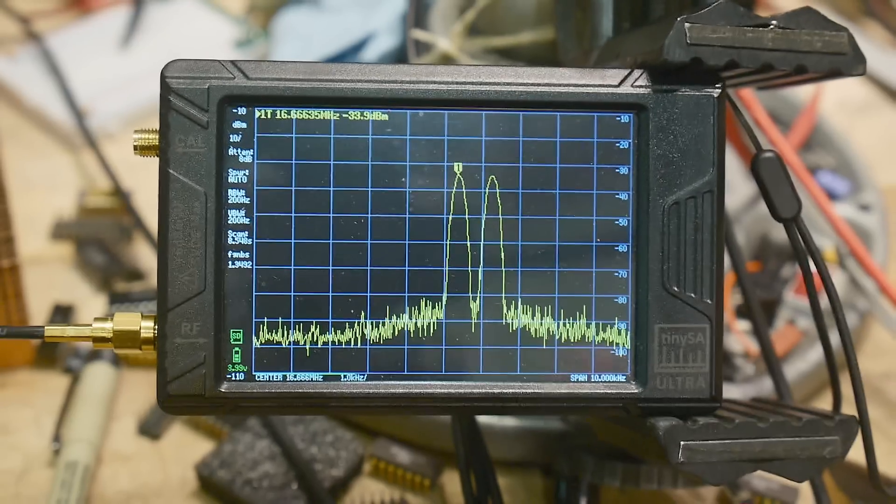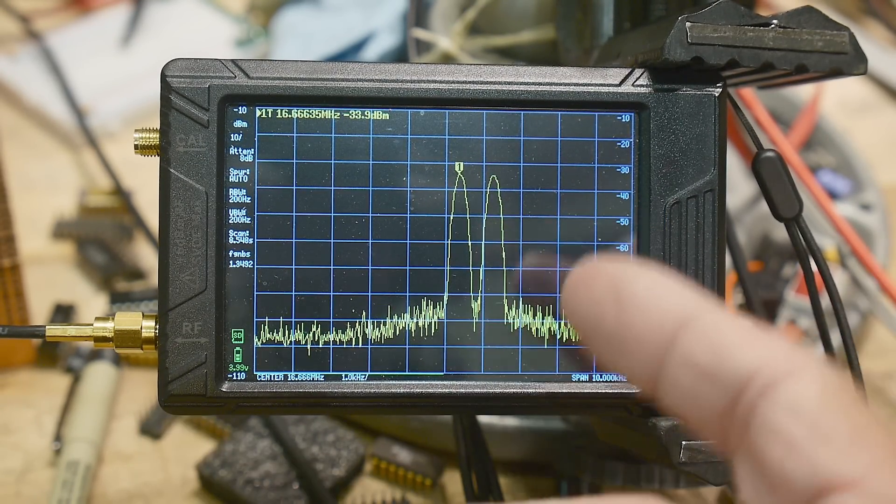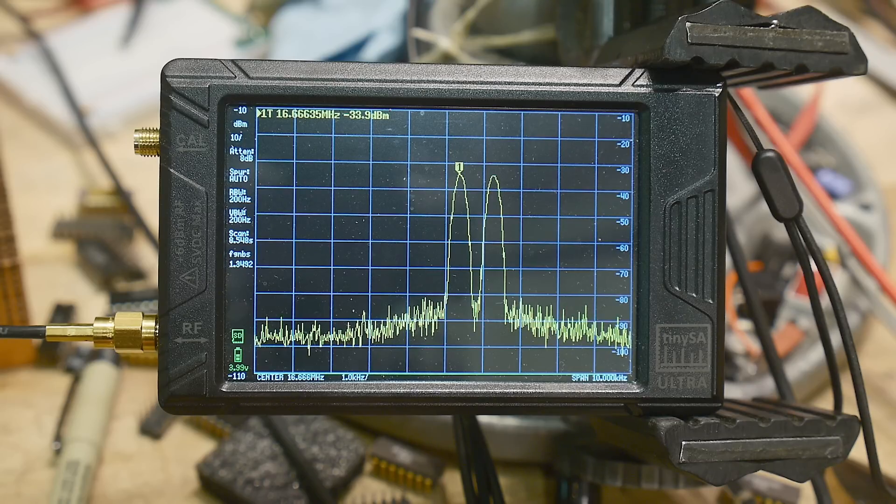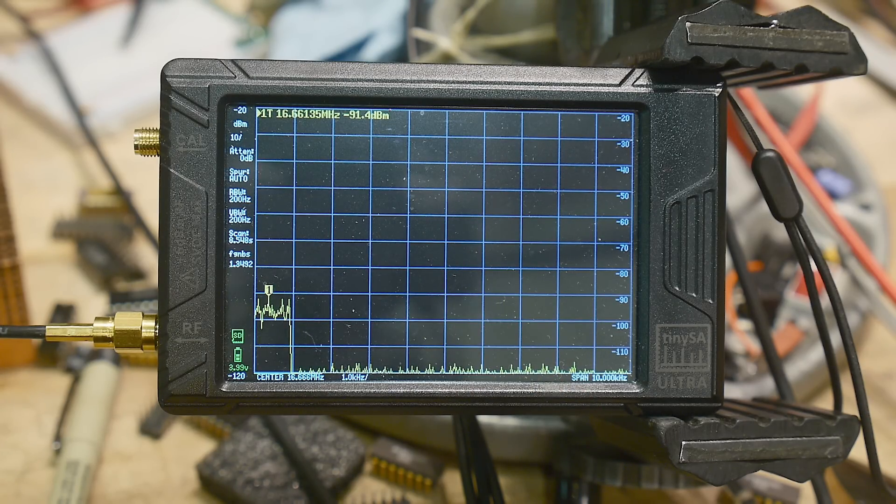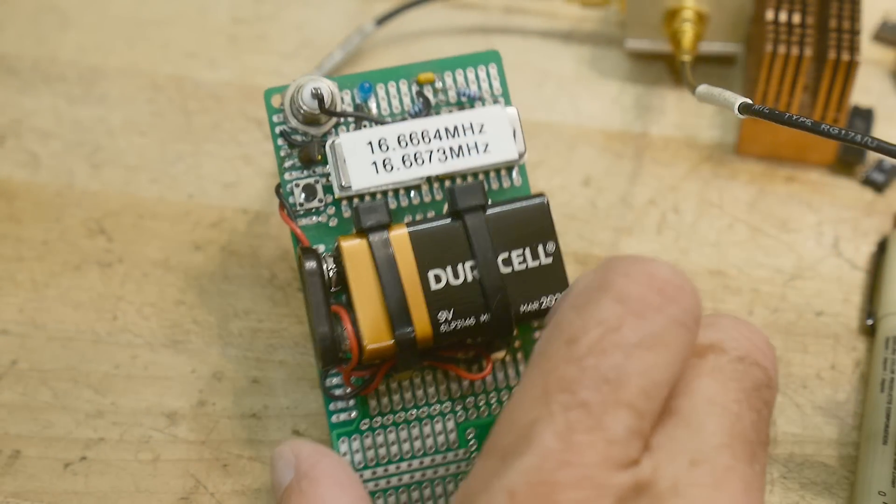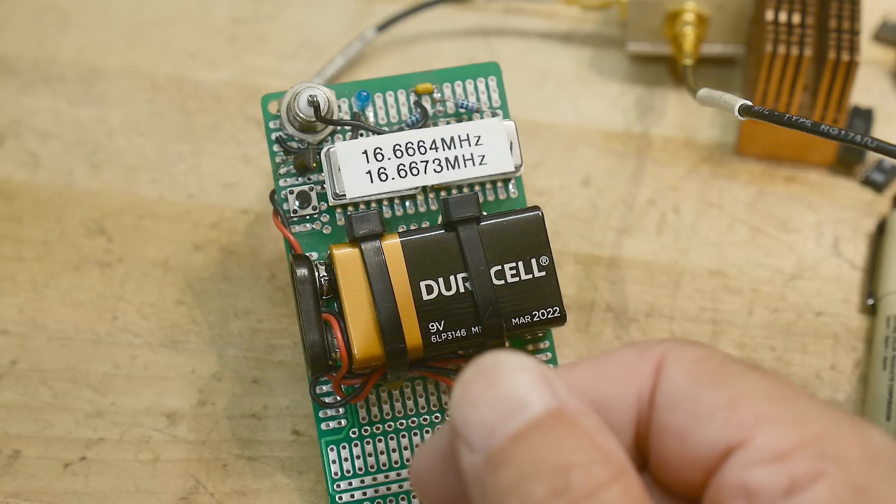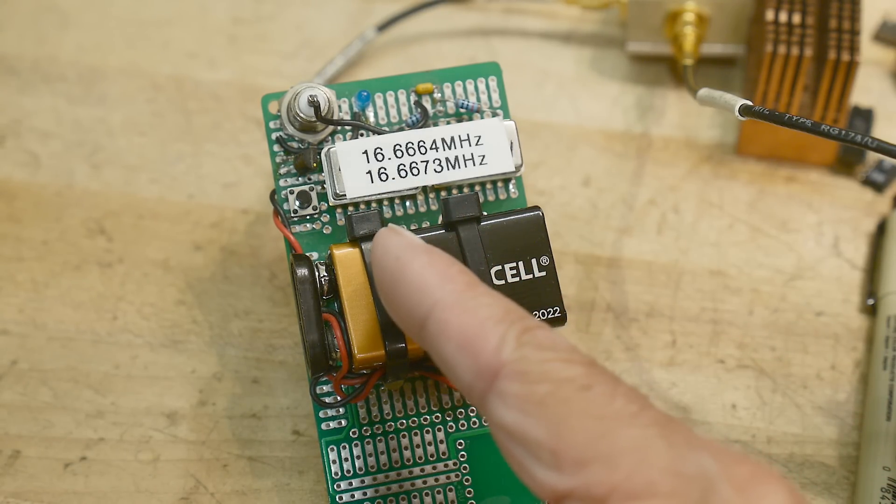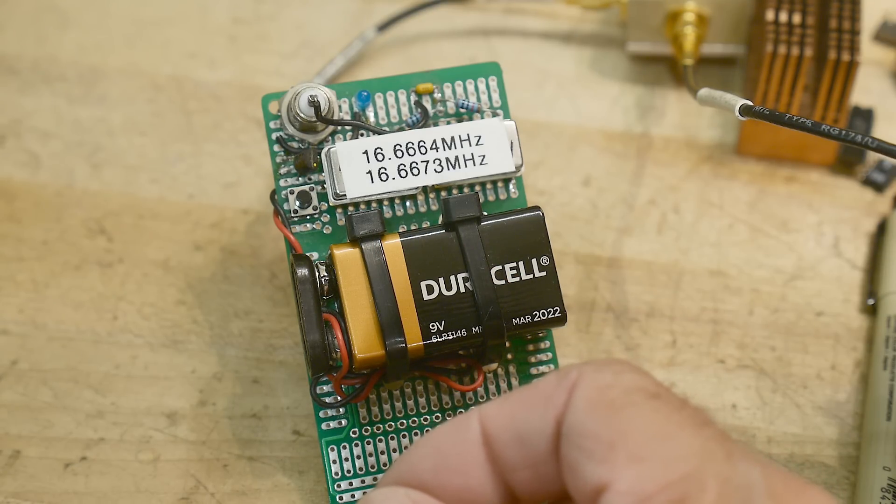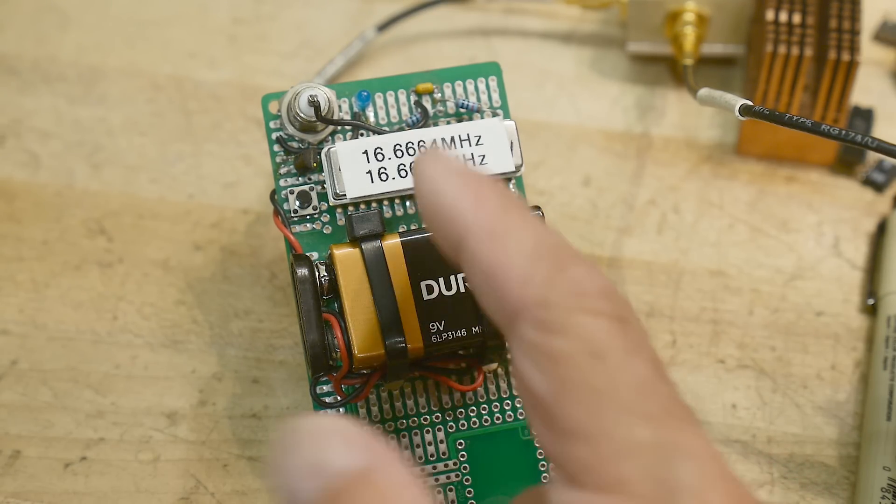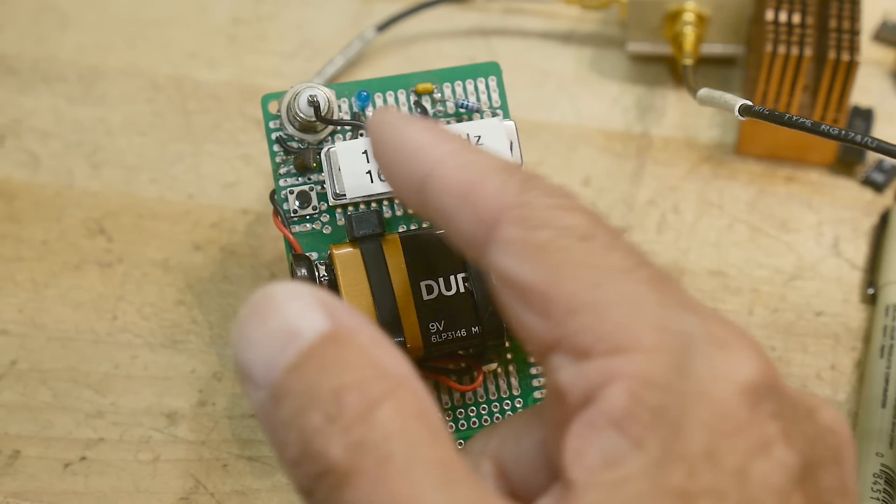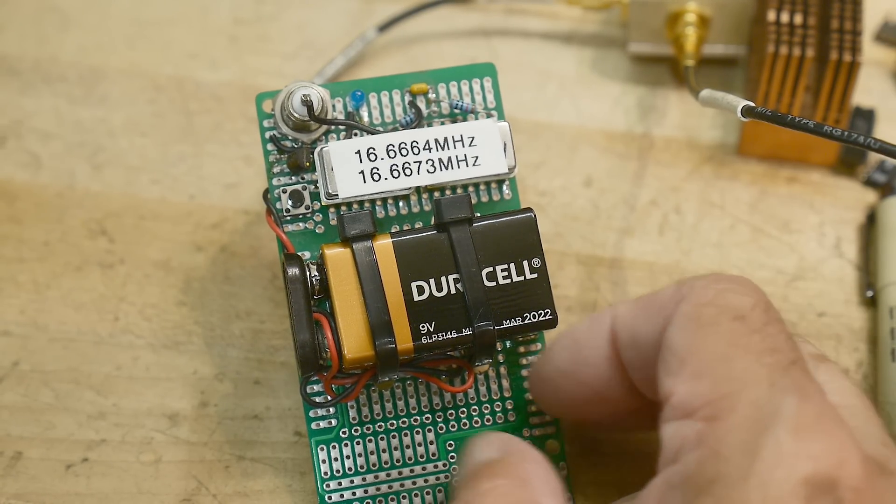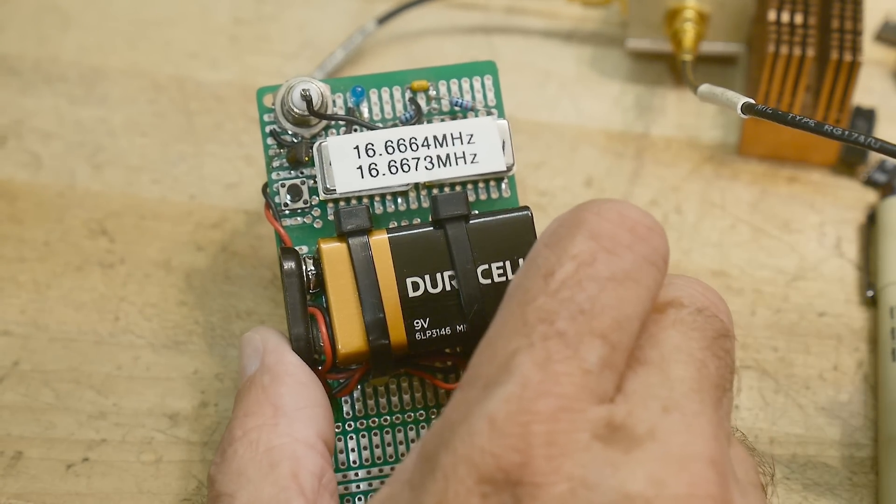So besides the very slow span of the Ultra, it does have nice resolution bandwidth that allows you to see signals like this. So anyway, if you're looking to purchase a spectrum analyzer, you want to run over to your friend's house and see how good theirs is. You can build one of these and pick whatever space you want between the two of them. But it's a nice little tool to have in your pocket.